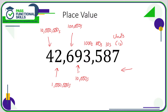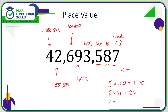So if we were asked, what is the value of the 5 in this number? Well, the 5 is in the 100s column, so that's 5 multiplied by 100 — the value of the 5 is 500. The value of the 8 is 8 lots of 10, which is 80. The value of the 7 is 7 lots of 1, which is 7. The 3 is 3 lots of 1,000 — 3,000. The 9 is 9 lots of 10,000 — 90,000, and so on.